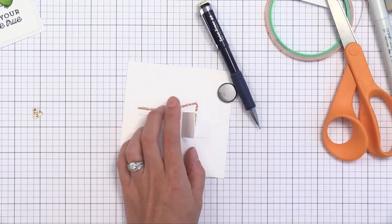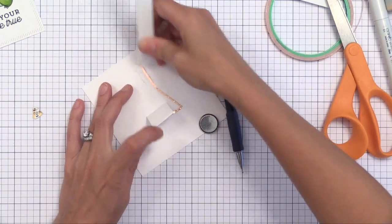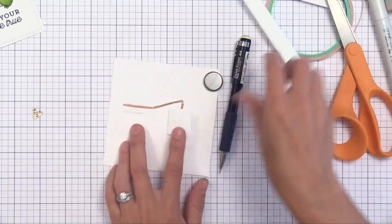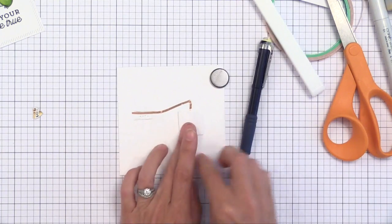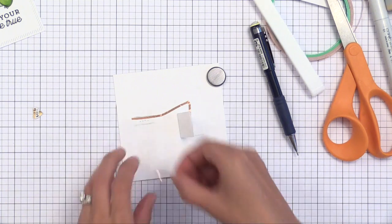Once you have it down, I like to take my bone folder and really press it down onto the paper so we have a nice smooth circuit. So now we have copper tape running from the light to the plus sign. Now we need to run another copper tape from the other line to the minus sign.